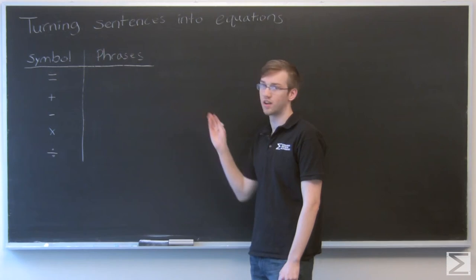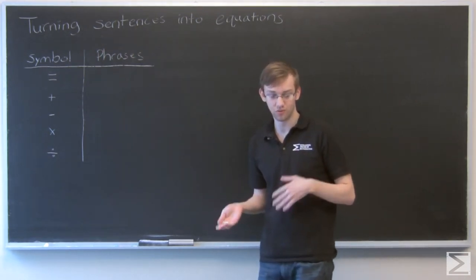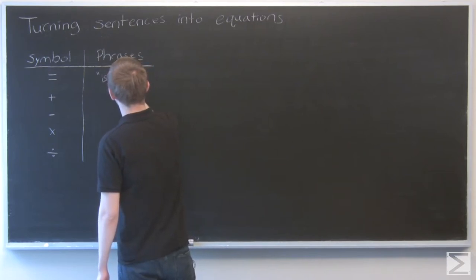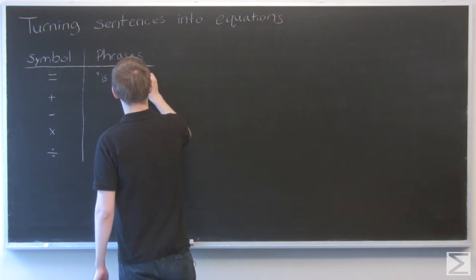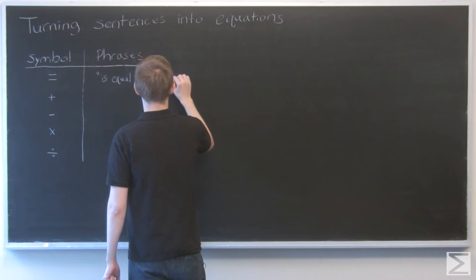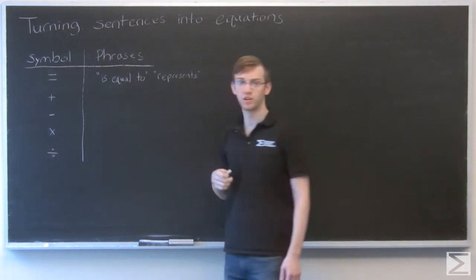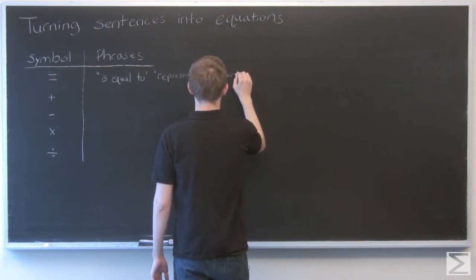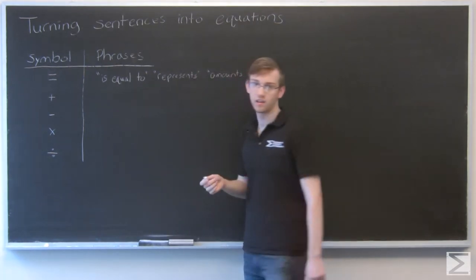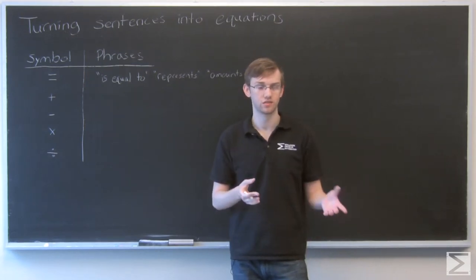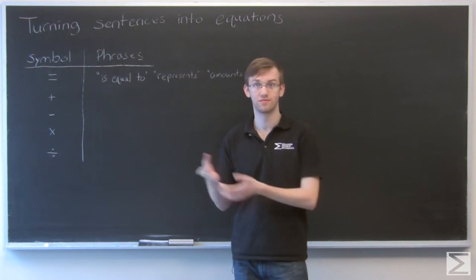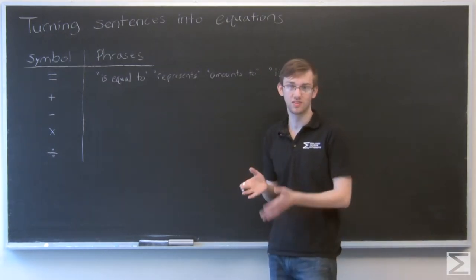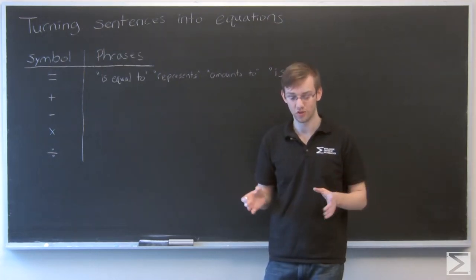When you have an equal sign, words that will correspond to this include 'represents,' 'amounts to,' and probably the most common, just the word 'is.' These quantities is the same as something else. Those are various keys to look out for, and when you see some of these words in a sentence, you'll know that you're dealing with an equation where two sides are equal to each other.